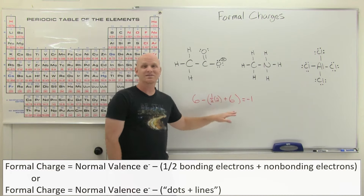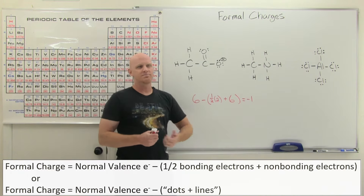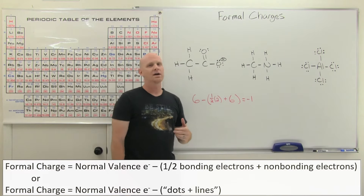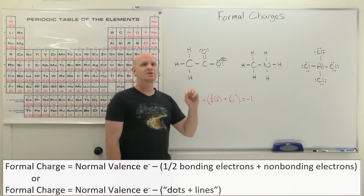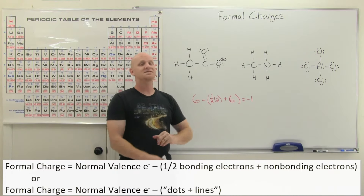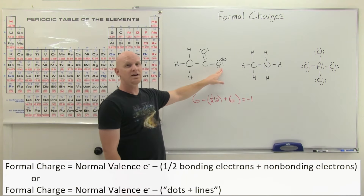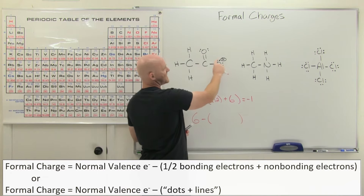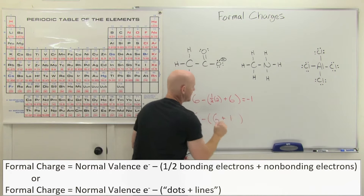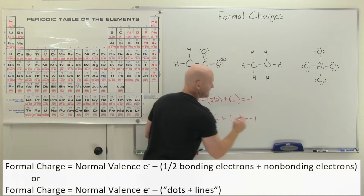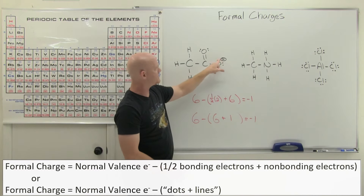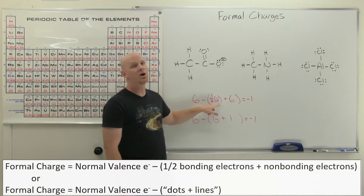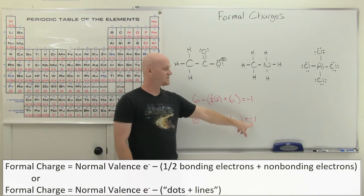Rather than using that formal formula — which is hard to remember — a much easier way is: normal number of valence electrons minus the dots and lines. I'm not counting dots or lines as electrons; I'm just counting them as dots and lines. For this oxygen, his normal number is six, and he's got six dots and one line around him — six plus one is seven — and six minus seven equals negative one. Notice I count that bond as one line, not two electrons. So normal valence minus dots and lines still gives me negative one.